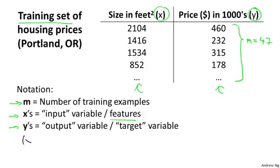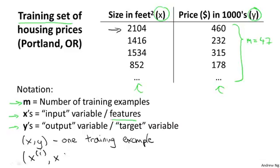A little bit more notation. I'm going to use (x, y) to denote a single training example. So a single row in this table corresponds to a single training example. And to refer to a specific training example, I'm going to use this notation (x^(i), y^(i)). And I'm going to use this to refer to the i-th training example. So this superscript i over here, this is not exponentiation. This (x^(i), y^(i)), the superscript i in parentheses, that's just an index into my training set. And it refers to the i-th row in this table. So this is not x to the power of i, y to the power of i. Instead, (x^(i), y^(i)) just refers to the i-th row of this table.